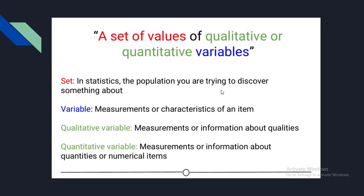Variables are measurements or characteristics of an item. For example, you could be measuring the height of a person, or the amount of time a person stays on a website, or a qualitative characteristic like what a person clicks on or whether a visitor is male or female. Qualitative variables are information about qualities — things like country of origin, sex, or treatment group — described by words, not numbers. Quantitative variables are information about quantities, described by numbers on a continuous ordered scale, such as height, weight, and blood pressure.